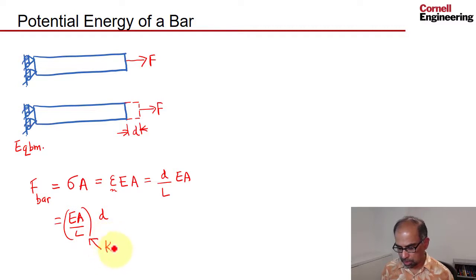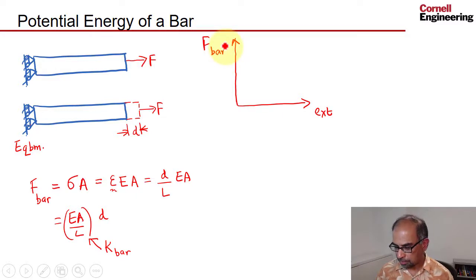So if I plot—we love these plots of course—if I plot the extension versus the force in the bar, I will initially have extension of zero, the force in the bar is zero. At equilibrium, the extension is D and the force is K_bar times D.